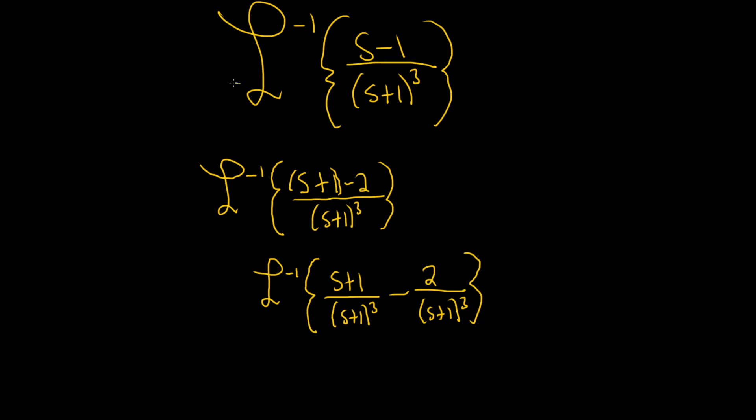It's s plus 1 over s plus 1 cubed minus 2 over s plus 1 cubed. So you can go from here to here. How? You want it to be s plus 1, so you just put it there. We say, okay, it's an s minus 1. So how do you get a minus 1? You subtract 2. See, so I usually just go from here to here. I don't show this intermediate step.